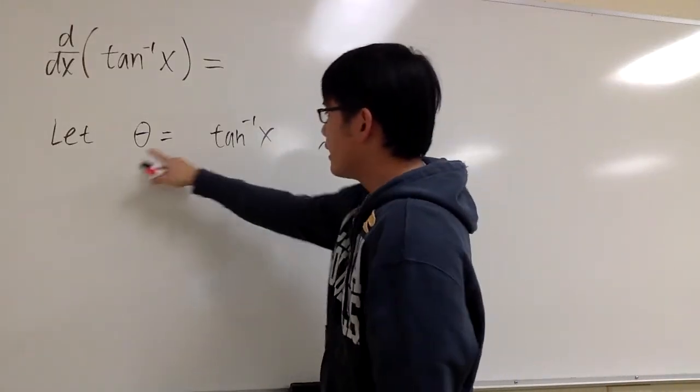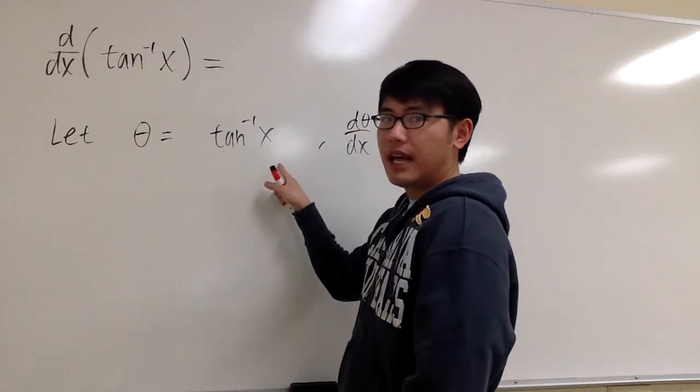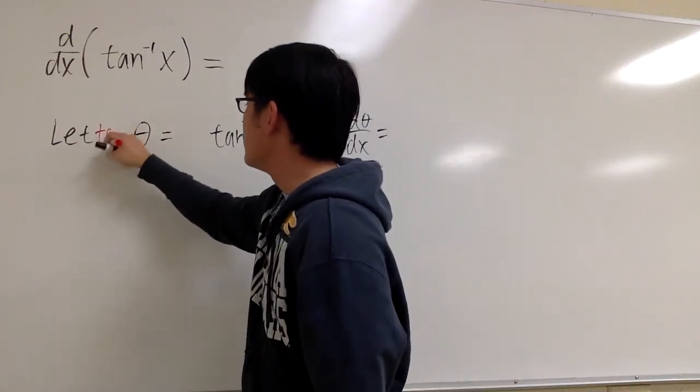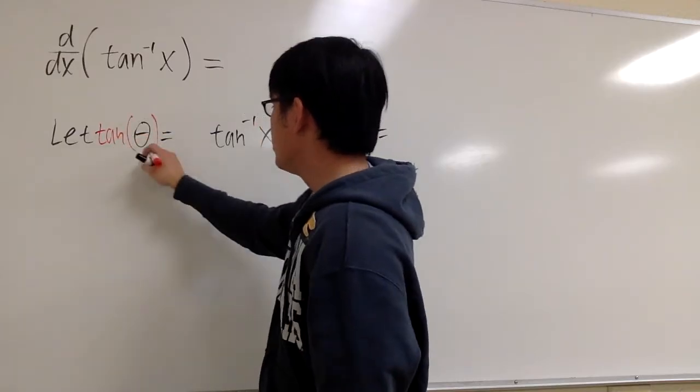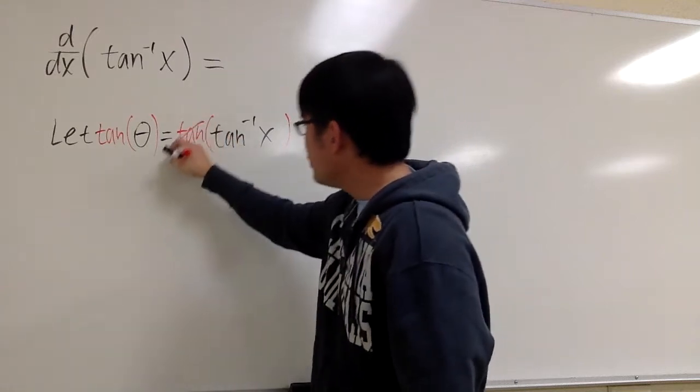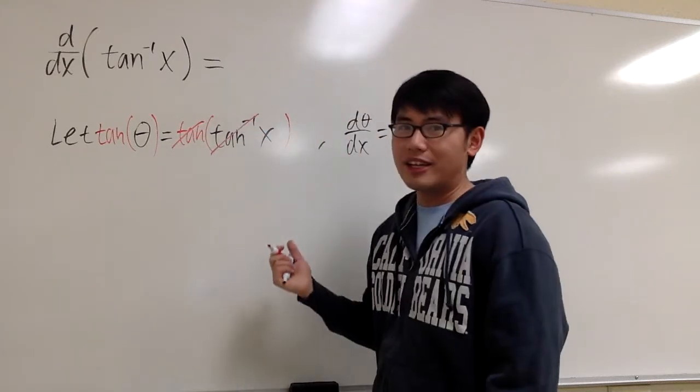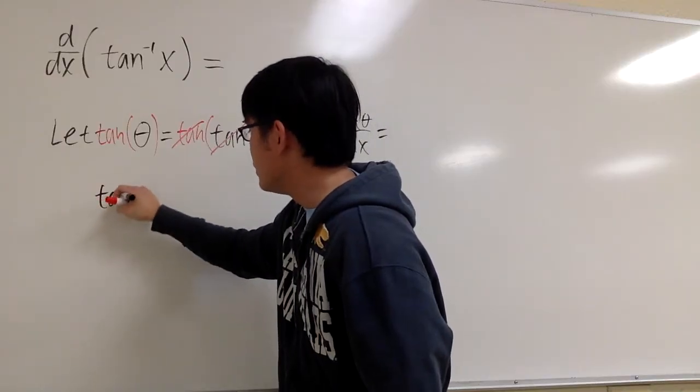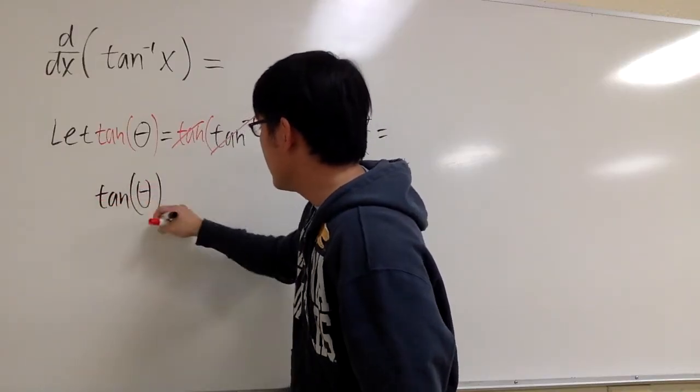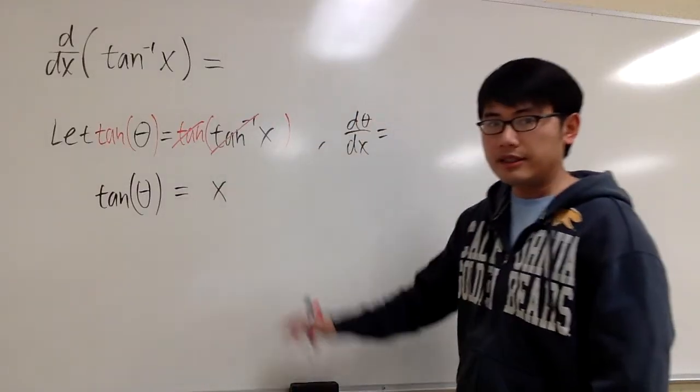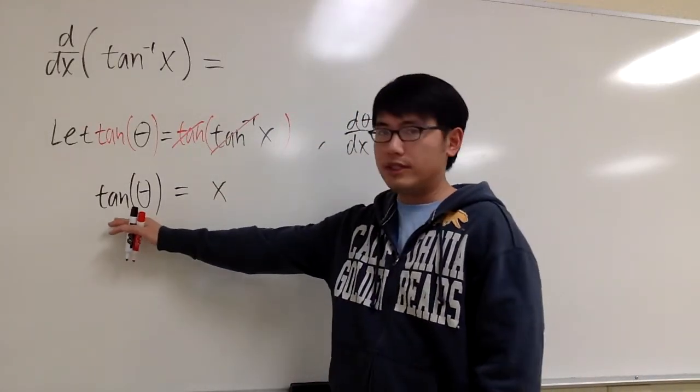Once I have this equation, theta equals the inverse tangent x, I can apply the original tangent on both sides. When we do that, the original and the inverse, they cancel each other out. Now I can look at this equation as the original tangent theta equals x. As you can see, we can just deal with the original tangent now.